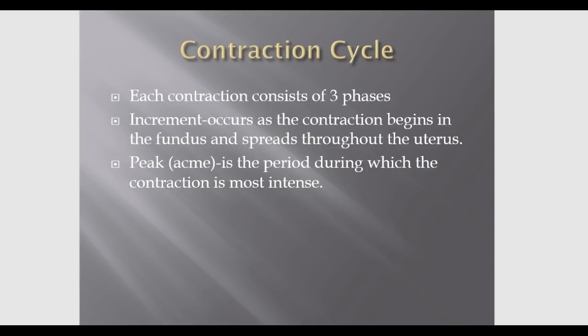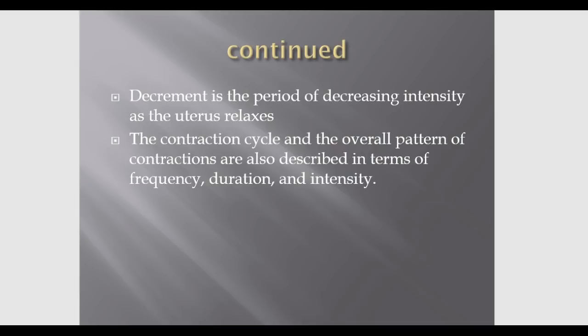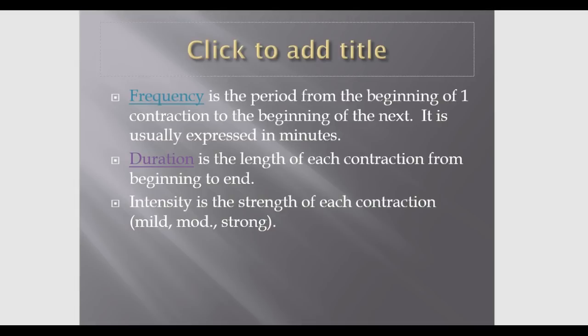Each contraction consists of three phases: the increment, where the contraction begins in the fundus and spreads throughout the uterus; the peak (also called the acme), which is the most intense period; and the decrement, the period of decreasing intensity as the uterus relaxes. The contraction cycle is described in terms of frequency — from the beginning of one contraction to the beginning of the next — duration, the length of one contraction from beginning to end, and intensity, which can be mild, moderate, or strong.